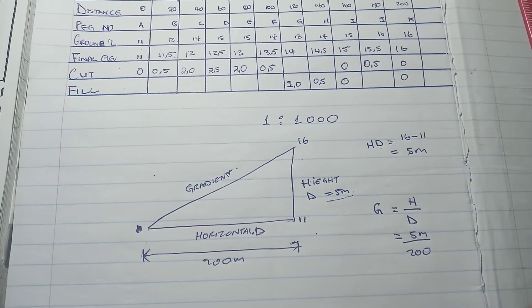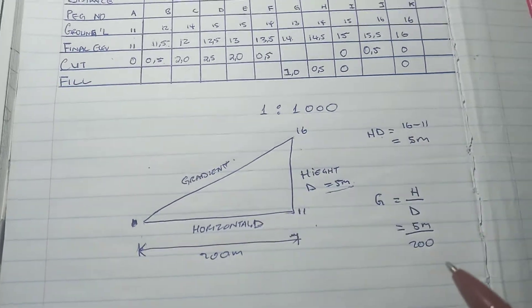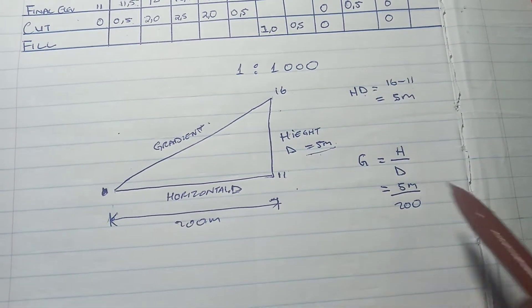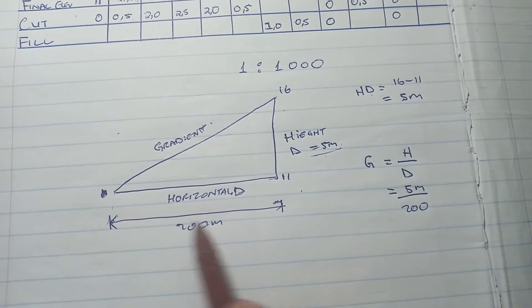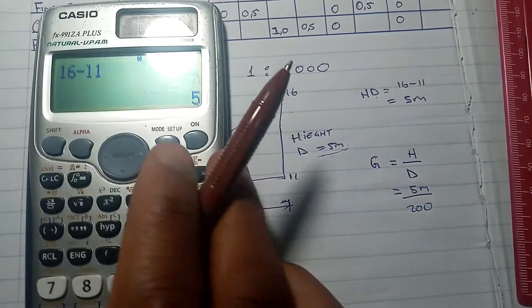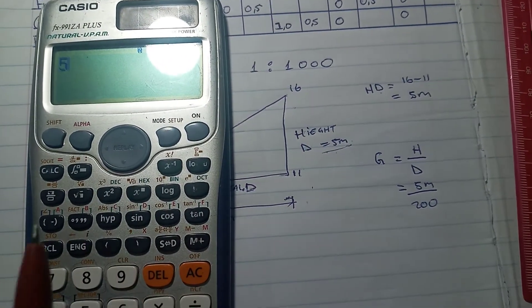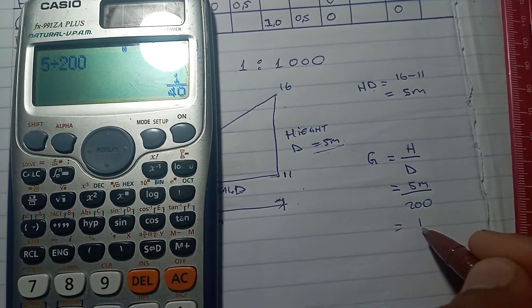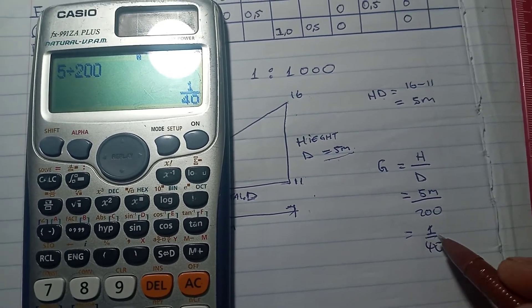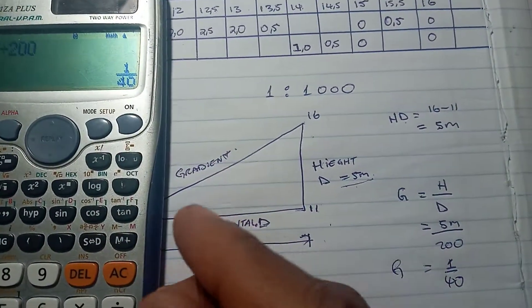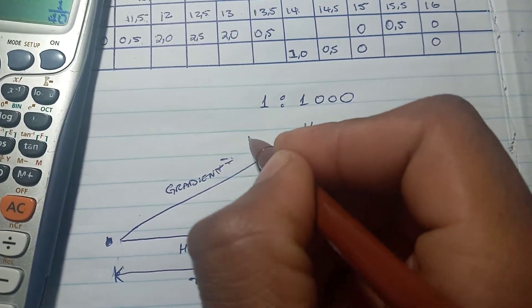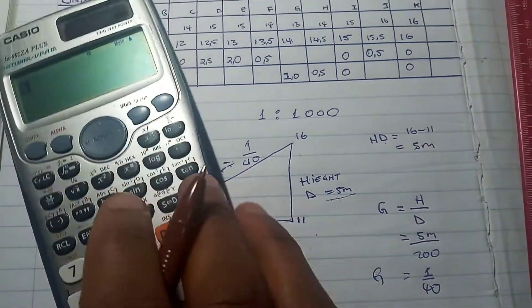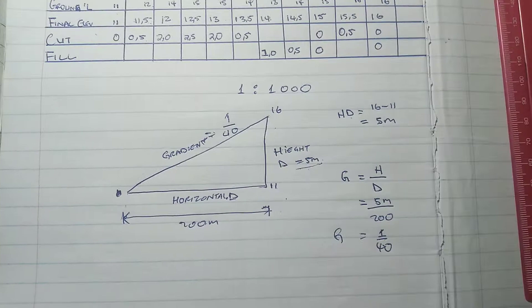So gradient equals 5 over 200, which equals 1 over 40. So 1 over 40 is our gradient.